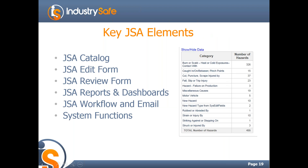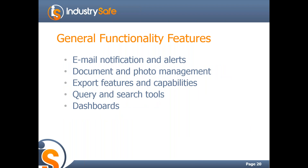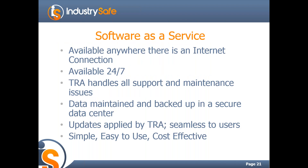IndustrySafe also has some general functionality features useful for JSA: automatic email alerts when JSAs are assigned, under review, or overdue; document and photo management so you can link photos or other documents to your JSA; and great export, query, and search features with comprehensive reporting. IndustrySafe is software as a service — available anywhere there is an internet connection, available 24/7. We handle all support and maintenance, maintain and back up data in a secure data center, apply updates two or three times a year, and it's simple, easy to use, and cost effective.